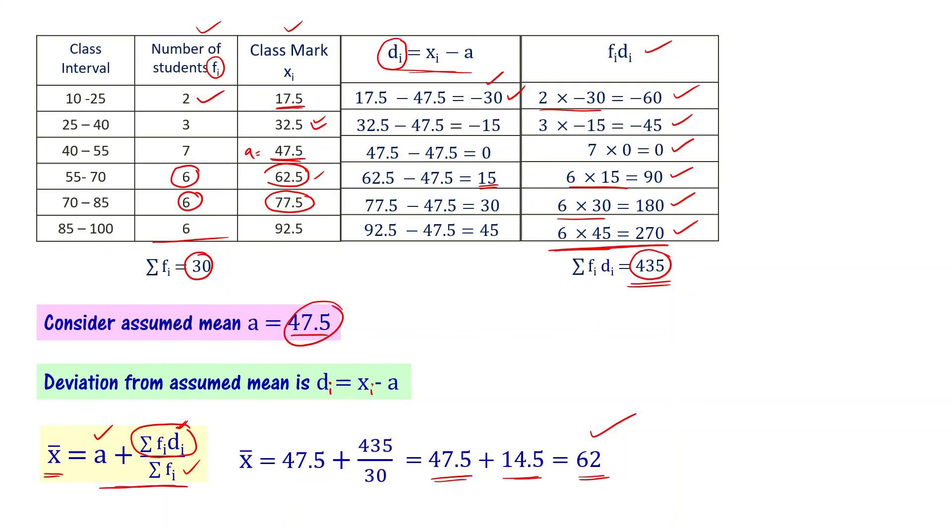Only the calculation effort is different. In the assumed mean method, the deviation from assumed mean reduces calculation effort. Otherwise, there is nothing different in the answer you get compared to direct method. The purpose of the assumed mean method is to reduce computational effort. The mean of this grouped distribution data, or the mean marks of the students, is 62.